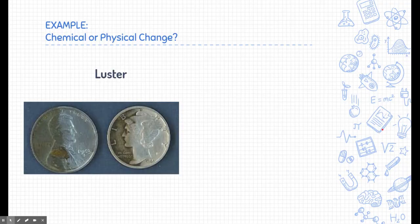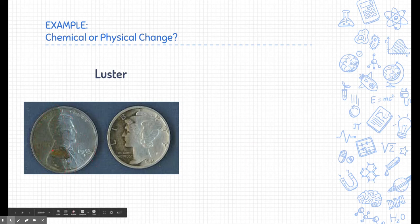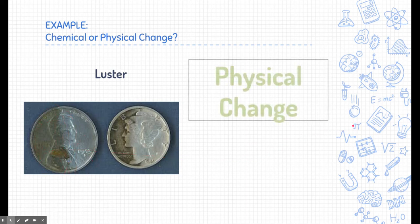What if I changed the luster of something? Here I have a coin. On one side, it's super shiny or lustrous. On the other side, it's tarnished or dull. Well, changing the luster of something is a physical change.